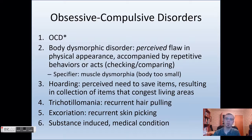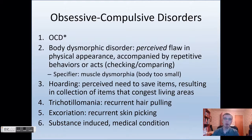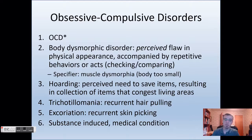Trichotillomania is a form of obsessive compulsive disorder where somebody is recurrently pulling at their own hair. They may be ripping out large chunks of their hair over time, so this one can be a very harmful disorder to experience or even witness. Excoriation is also very similar but involves recurrent skin picking, which can result in a lot of wounds all over the body. Then there's also substance-induced and medical conditions related to obsessive compulsive behaviors.